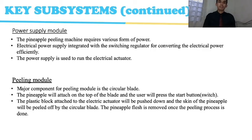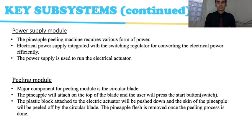Key subsystems continued. For the power supply module, the pineapple peeling machine requires various forms of power. The electrical power supply integrates with a switching regulator for converting electrical power efficiently, and is used to run the electric actuator. For the peeling module, the major component is the circular blade. The pineapple is attached on top of the blade, the user presses the start button, and the plastic block attached to the electric actuator is pushed down so that the skin of the pineapple is peeled off by the circular blade.